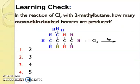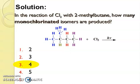So learning check. In the reaction of Cl2 with 2-methylbutane, how many monochlorinated isomers are produced? So answer is four.